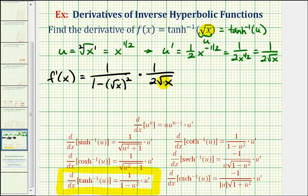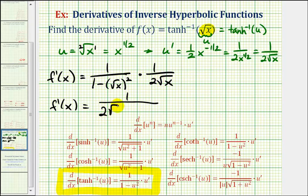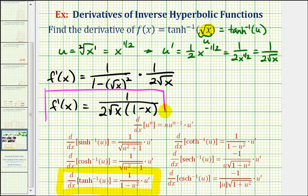Let's go ahead and find this product. F prime of x is equal to — one times one is one, and for the denominator, we put the two square root x first, then we have a factor of one minus the square root of x squared, which is just one minus x. So our derivative is one divided by two square root x times the quantity one minus x.